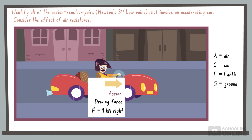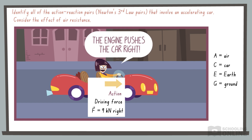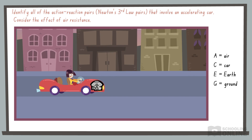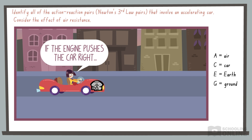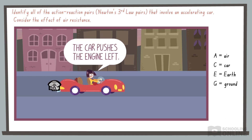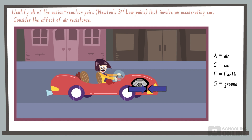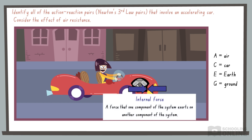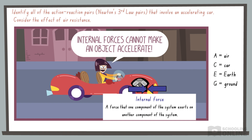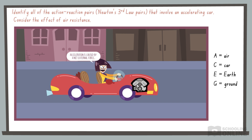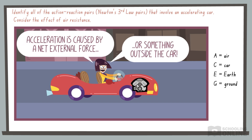Listen closely, because this is where things get confusing. Many people believe that the driving force is caused by the engine, so the engine pushes the car right. But this statement is incorrect. If the engine really pushed the car right, then the chassis would move right while the engine goes left — clearly this cannot happen because both objects are attached to each other. Furthermore, all forces between the engine and chassis are internal forces, as they are both components of the car. Internal forces never cause acceleration. The car can only accelerate forwards if there is a net external force caused by something outside the car.